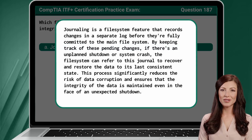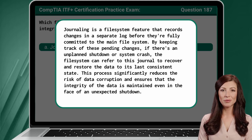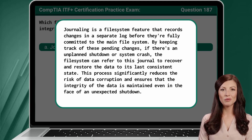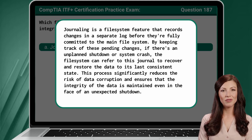Journaling is a file system feature that records changes in a separate log before they're fully committed to the main file system. By keeping track of these pending changes, if there's an unplanned shutdown or system crash, the file system can refer to this journal to recover and restore the data to its last consistent state. This process significantly reduces the risk of data corruption and ensures that the integrity of the data is maintained even in the face of an unexpected shutdown.